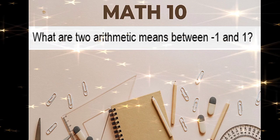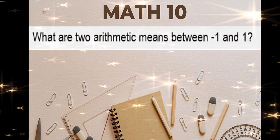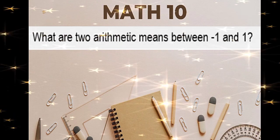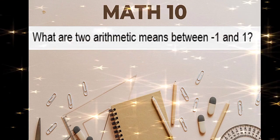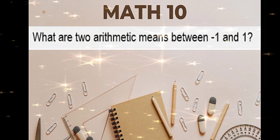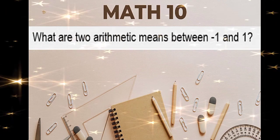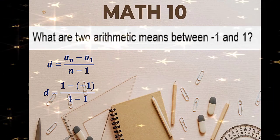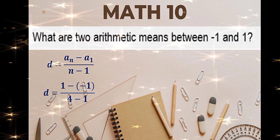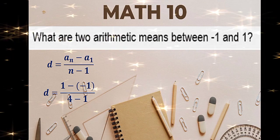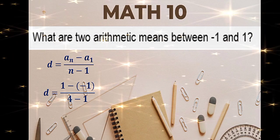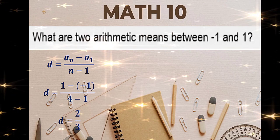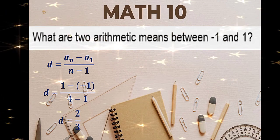What are two arithmetic means between negative 1 and 1? Our first term is negative 1 and the last term is 1, and we will put two arithmetic means between them. That means we are creating four terms in total. Using the same formula: a sub n is 1, a sub 1 is negative 1, and n is 4. Simplify: 1 minus negative 1 is 2, and 4 minus 1 is 3. The difference is 2/3.